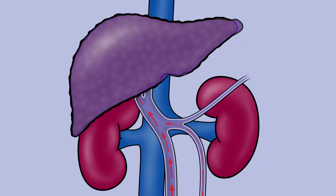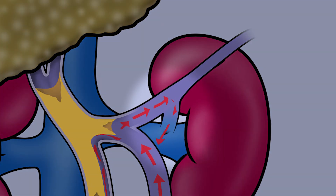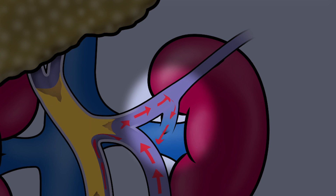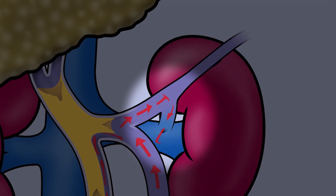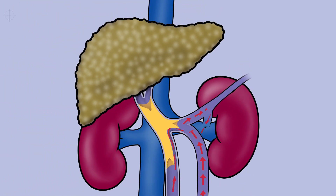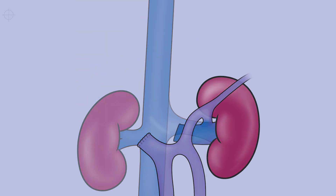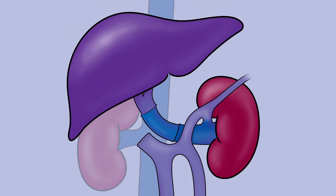Most of the time, patients with portal vein thrombosis develop what we call collateral veins — veins that try to connect blood flow from the intestine to the systemic circulation. They go through the left kidney vein to return to the main circulation. So we're able to cut the left kidney vein and connect it to the new liver so that the new liver would be supplied by blood flow through that vein.